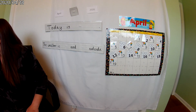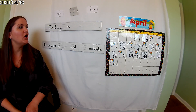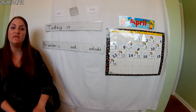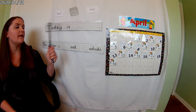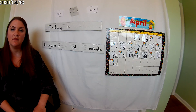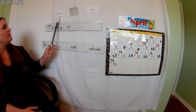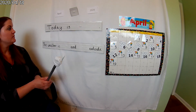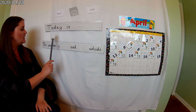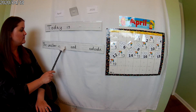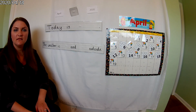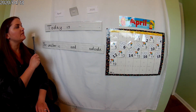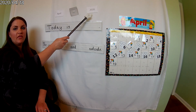Why don't we get started with our message? You guys can help me fix it, just like you always do — we go into school and somebody messes it up every time. It says April 2020, today is, the weather is, and outside. Let's look at our first sentence — it says April 2020.